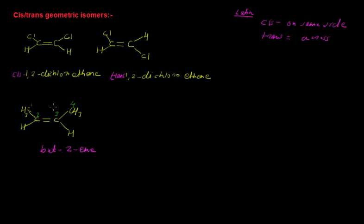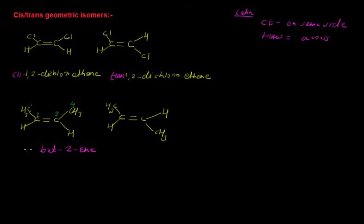We can write the geometrical isomer of this compound as well. In one case the CH3 groups are present on the same side — that is cis-but-2-ene. When the methyl groups are present on the opposite side, we write it as trans-but-2-ene.